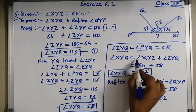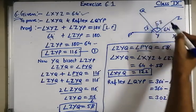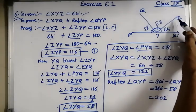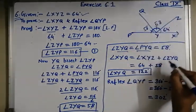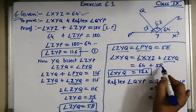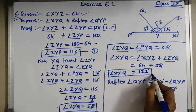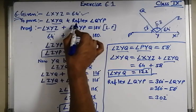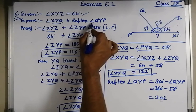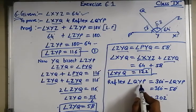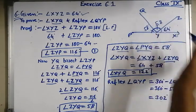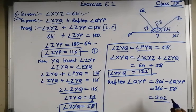Angle XYQ is equal to XYZ plus ZYQ — these two angles. The value is 64 plus 58, so XYQ is equal to 122 degrees. Now reflex angle QYP: reflex angle equals 360 minus angle QYP, so 360 minus 58. Since QYP is 58 degrees, the reflex angle QYP is 302 degrees.